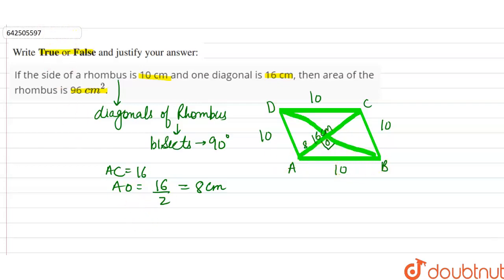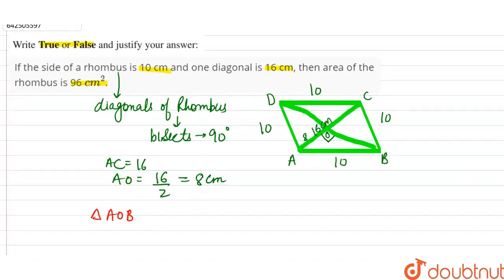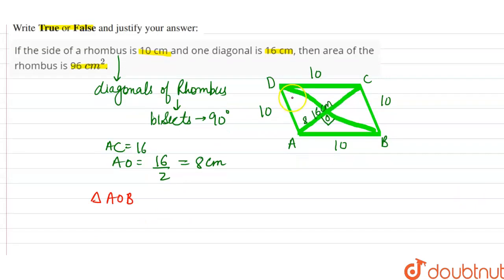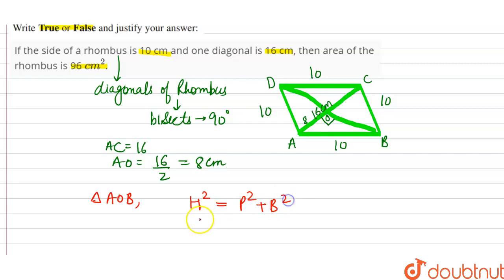Now if we talk about triangle AOB, it is a right-angled triangle with the right angle at O. So we can apply the Pythagorean theorem, which says hypotenuse squared equals perpendicular squared plus base squared. Here, the hypotenuse is AB, so AB² = AO² + OB².